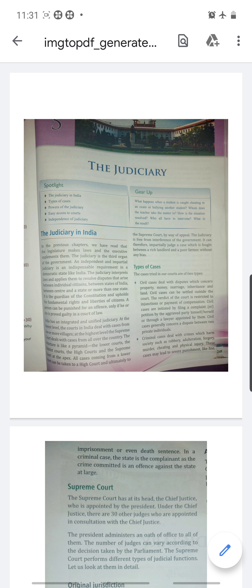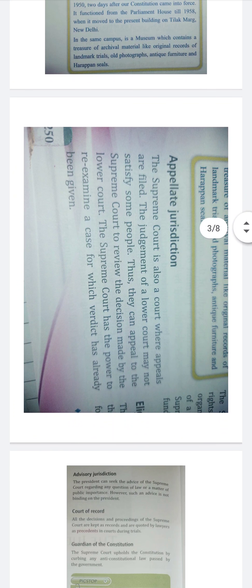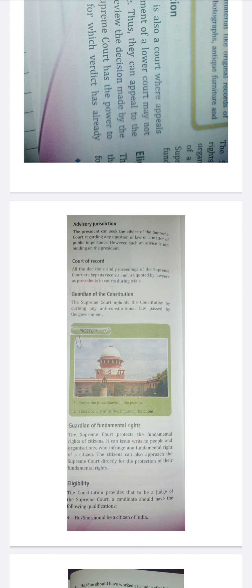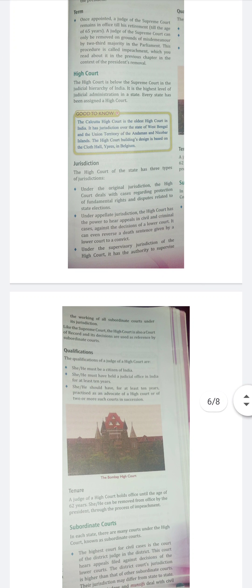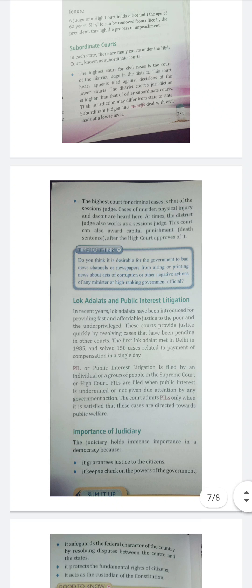We started with the chapter on the Judiciary. I covered the types of cases, what is the Supreme Court, original jurisdiction, appellate jurisdiction, advisory jurisdiction, why it is called the court of records, guardian of the constitution, guardian of fundamental rights, eligibility to become a judge of the Supreme Court, their tenure, all about the High Court and qualifications needed. We also discussed subordinate courts.